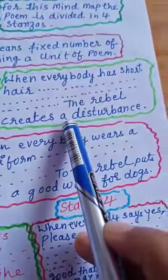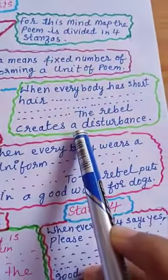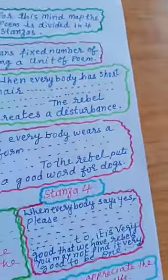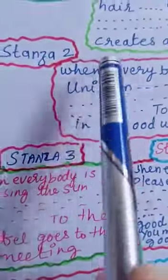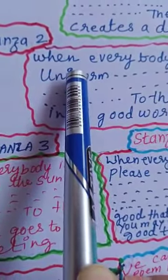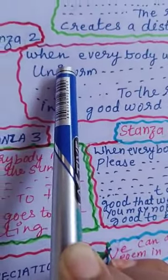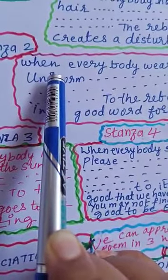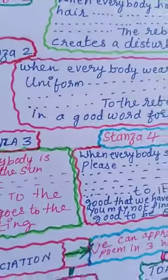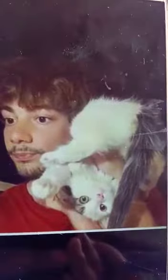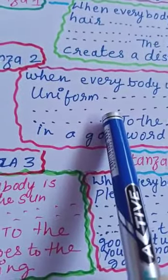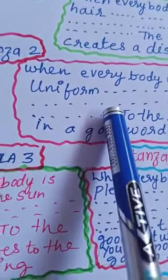When everybody talks during a lesson, the rebel doesn't say a word. When everybody is silent during the lesson, the rebel creates a disturbance. When everybody wears a uniform, the rebel dresses in fantastic clothes. When everybody wears fantastic clothes, the rebel dresses soberly. In the company of dog lovers, the rebel expresses a preference for cats. In the company of cat lovers, the rebel puts in a good word for dogs.